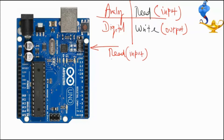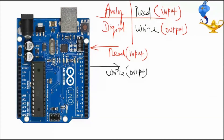Write means who is writing? Arduino is writing — so that is an output for the Arduino. I just replace input and output with read and write. There are four possible combinations.